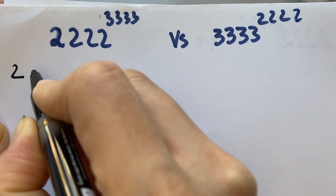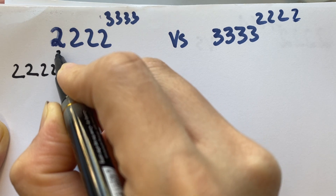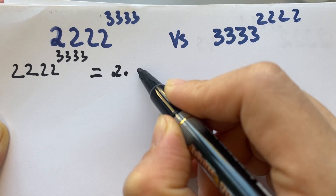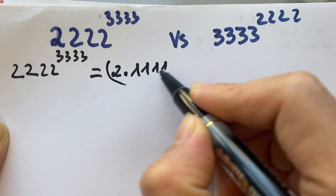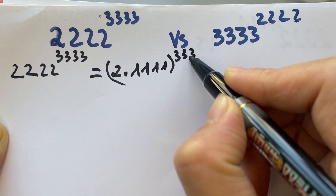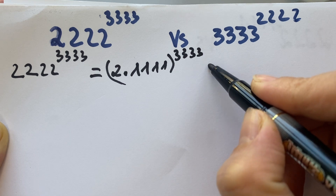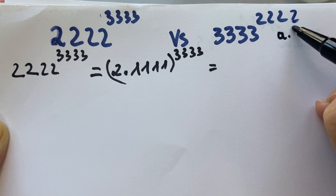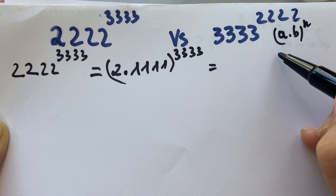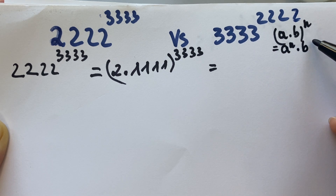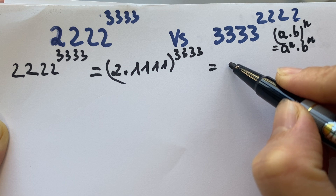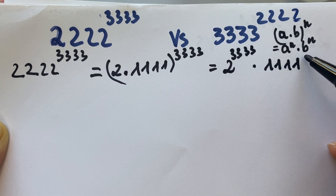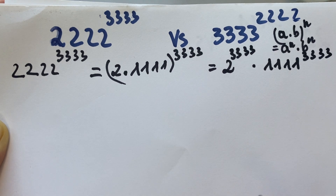Therefore, 2222 to the power of 3333 is equal to (2 times 1111) to the power of 3333. You need to apply the exponential rule: (a times b) to the power n equals a^n times b^n. Therefore, we have 2^3333 times 1111^3333.